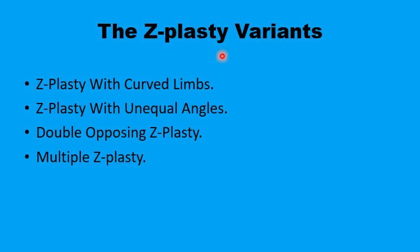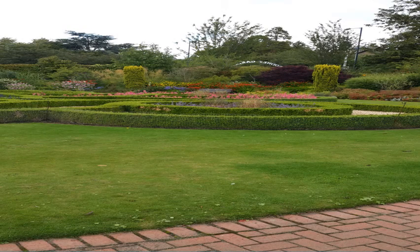Besides the usual variations in Z-plasty angle, there are several other variants: Z-plasty with curved limbs rather than straight lines, Z-plasty with two unequal angles, double opposing Z-plasty such as used in cleft palate repair, and multiple Z-plasties. These will be covered in the next presentations. We've reviewed the basic principles of Z-plasty, and in the next presentations we'll explore some of the variants. Salam alaikum, thank you.